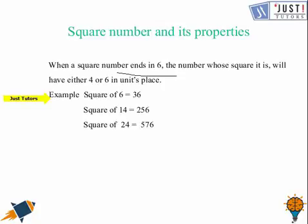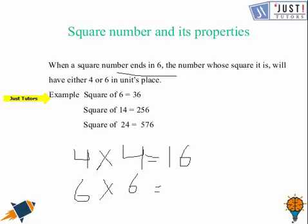It is again the same because 4 times 4 will give you 16 and 6 times 6 will give you 36. You can see in both these numbers, there is 6 at the unit place. That means squares of 4 and 6 will always have 6 at the unit place.